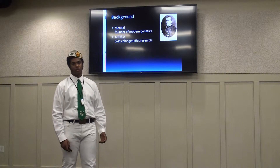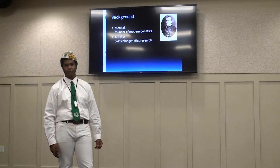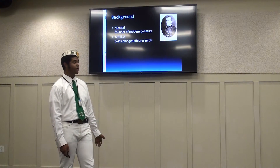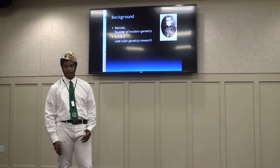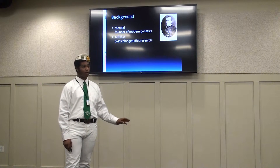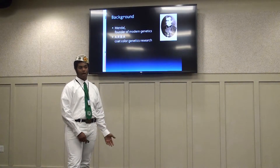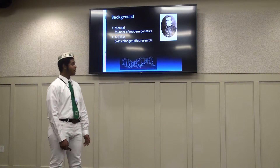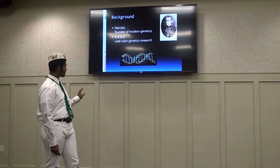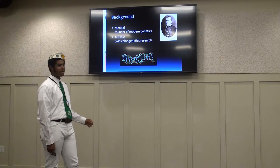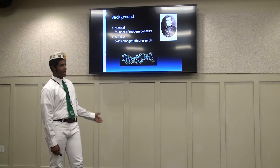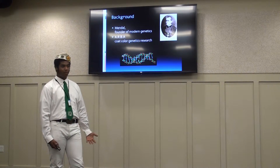ARBA later did coat color genetics research, breeding specific rabbits to achieve certain colors, and found the exact same thing Mendel found — that animals have dominant and recessive genes that show up inside the rabbit but are not actually visible. This is a picture from the genetics research they were doing. It shows a specific code inside the DNA indicating the ability to be a brown color, but the rabbit is in fact black because black is more dominant and will show over brown.